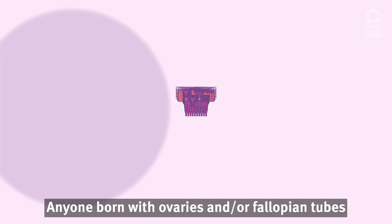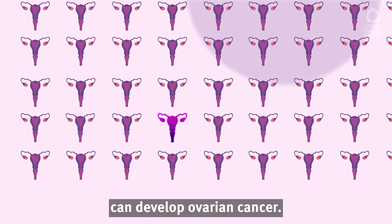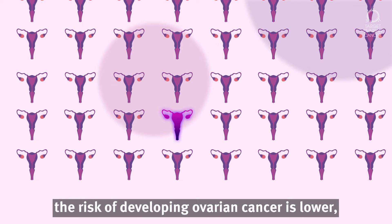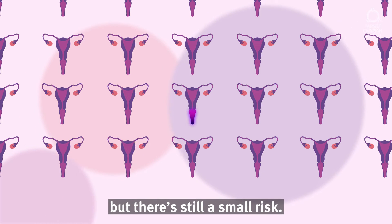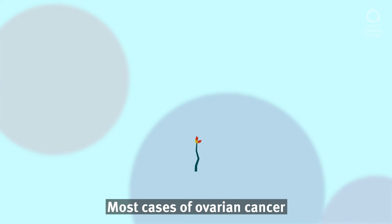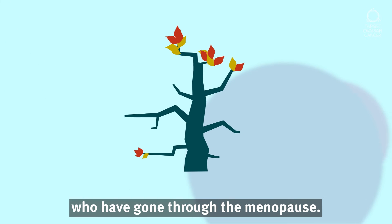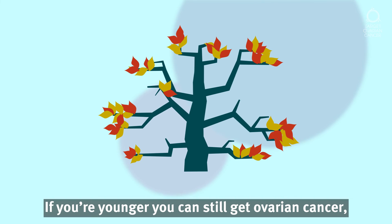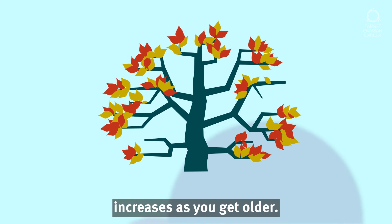Anyone born with ovaries and or fallopian tubes can develop ovarian cancer. If your ovaries and fallopian tubes have been removed, the risk of developing ovarian cancer is lower, but there's still a small risk. Most cases of ovarian cancer happen in women over the age of 50 who have gone through the menopause. If you're younger, you can still get ovarian cancer, but the chance of developing it increases as you get older.